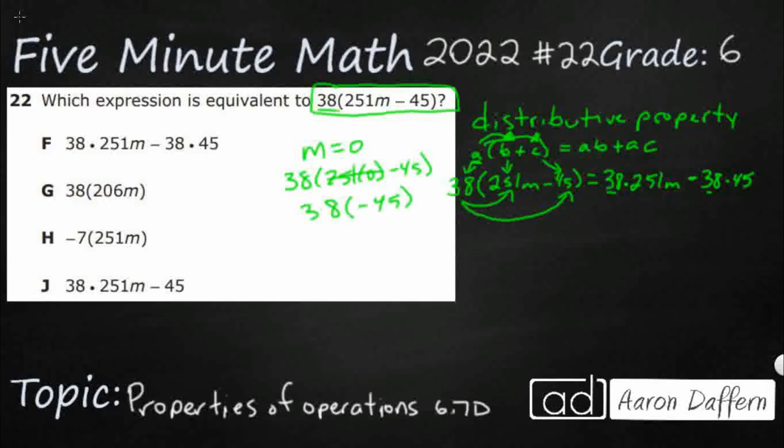So, let's see what happens if I make M zero here. Well, if M is zero right there, guess what happens to this whole line? That becomes zero, because anything times zero is zero. And look what I've got: negative 38 times 45, negative 45 times 38. Doesn't matter where the negative is. It's going to be negative 38 and 45. My answer is F.